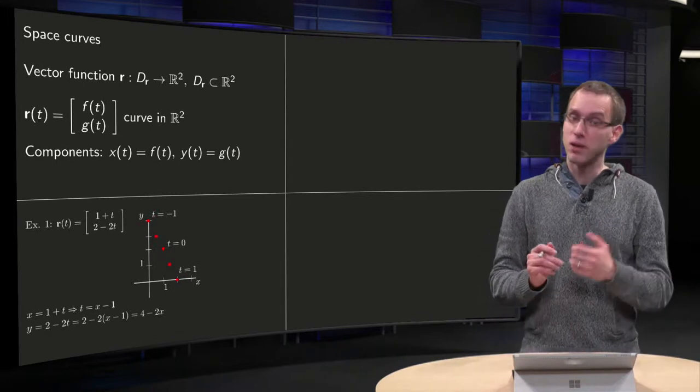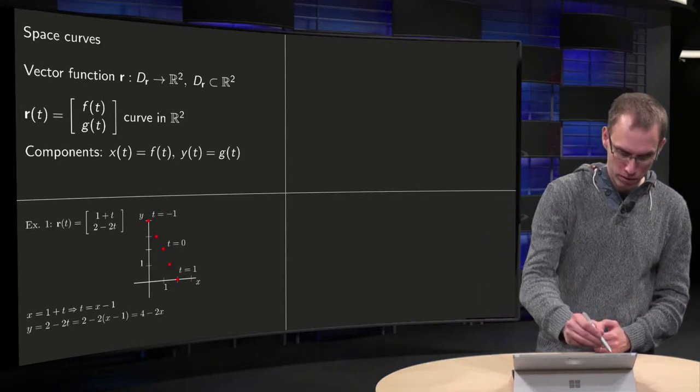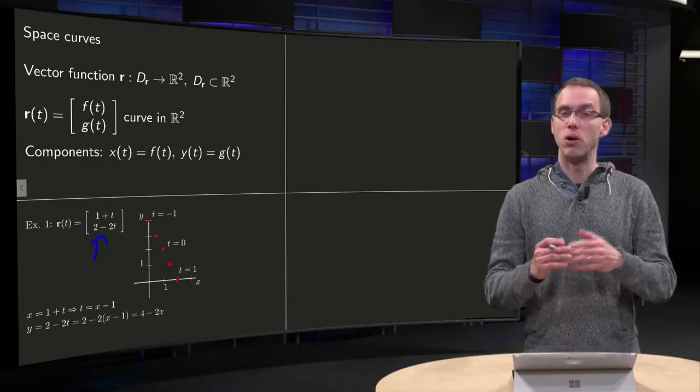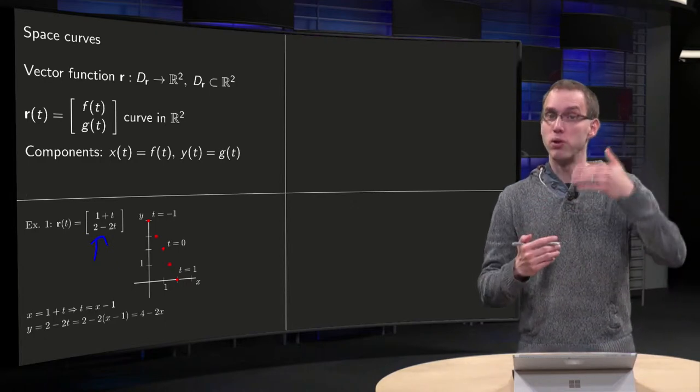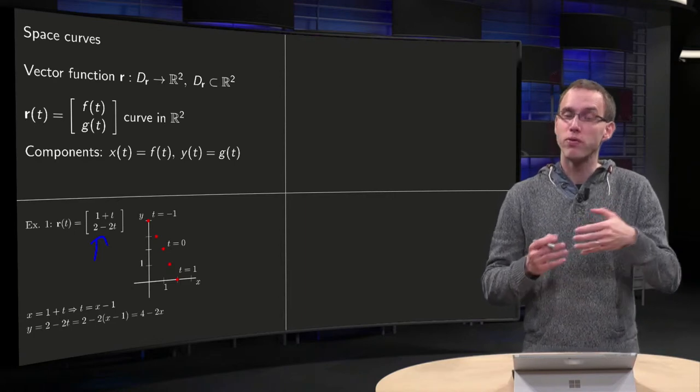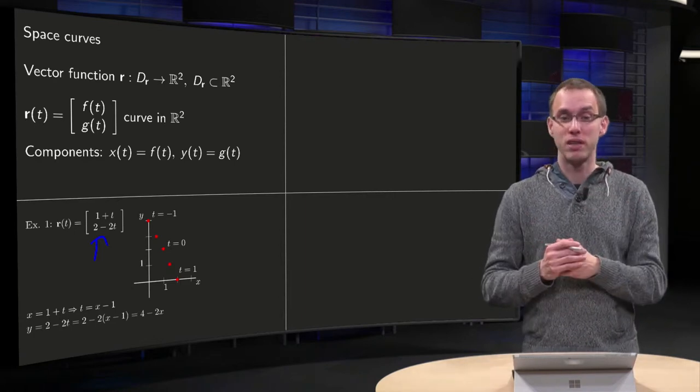So let us look at a few examples. For example the function 1 plus T, 2 minus 2T. So we have as components two linear functions, so it looks very easy. So what kind of space curve will this give us?